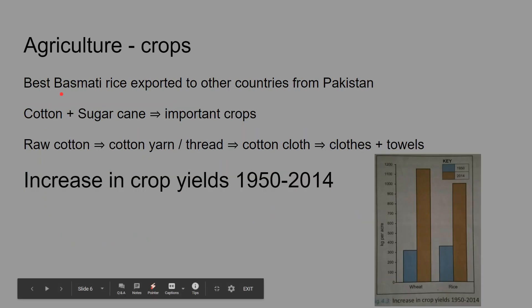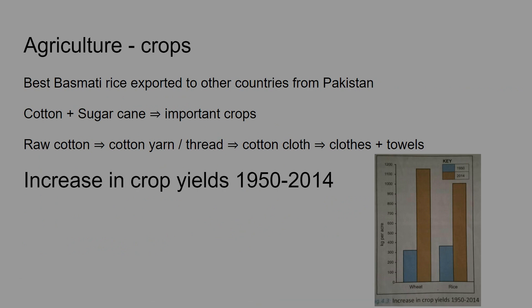Agriculture gives us important crops. The best basmati rice is exported to different parts of the world. We also have cotton and sugar cane as important crops. From raw cotton, for example, we can make cotton yarn or thread, which is used to make cotton cloth, and that cloth is used to make clothes and towels.